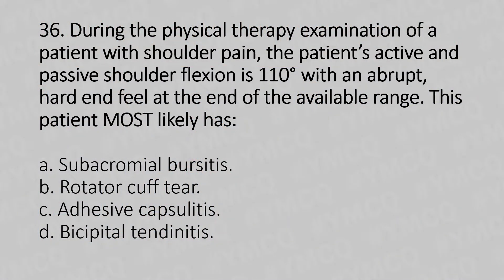During the physical therapy examination of a patient with shoulder pain, the patient's active and passive shoulder flexion is 110 degrees with an abrupt hard end feel at the end of the available range. This patient most likely has: Option A Subacromial Bursitis, Option B Rotator Cuff Tear, Option C Adhesive Capsulitis, Option D Bicipital Tendinitis. And the answer is...